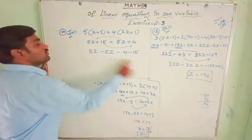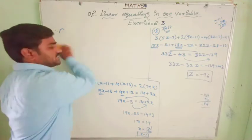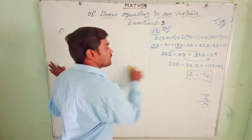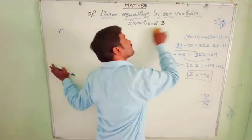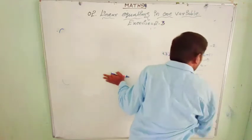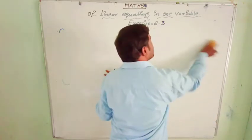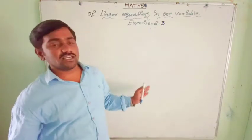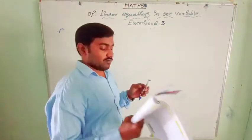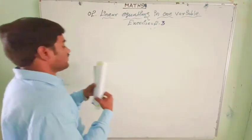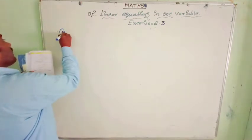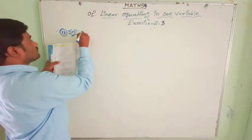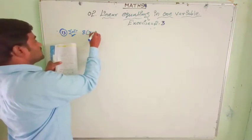Now let us go for the 13th problem. Simplifications are very easy children. We have to practice once again after watching this video — keep the question before you and solve it on your own, so you know whether you are doing it correctly. If you are making a mistake, come back and watch the video again.